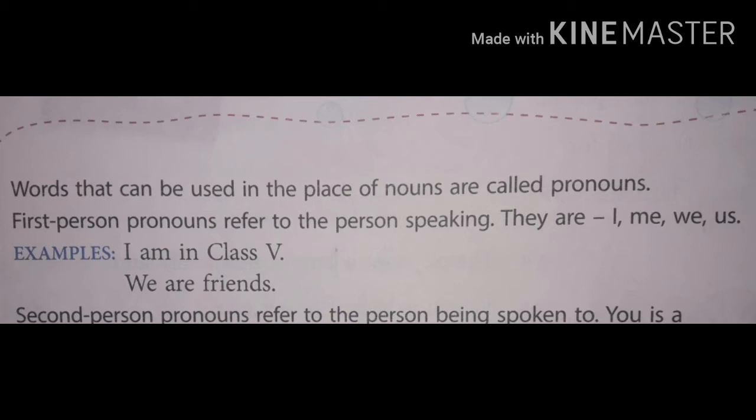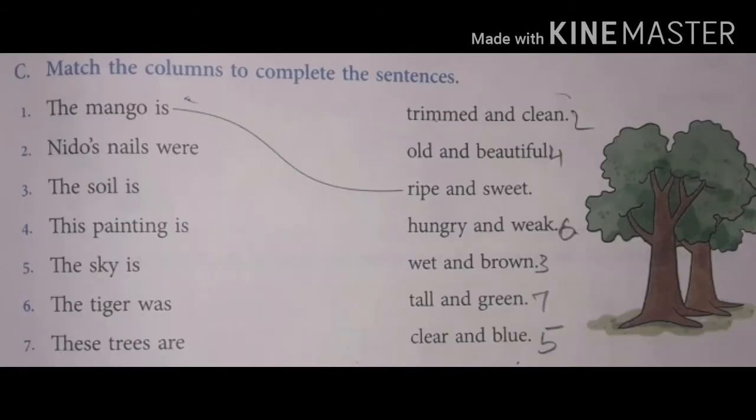The exercise is given on page number 51. All of you open your books on page number 51. The question is: match the columns to complete the sentences. The first one is 'the mango is' - the correct answer is 'ripe and sweet.'